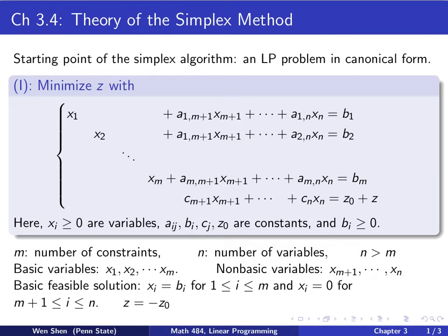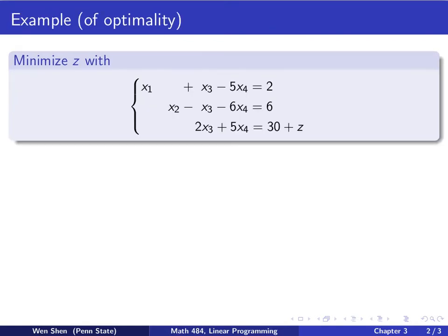Starting from that, we'll develop an algorithm. Now let's first take an example where optimality is reached. Look at this following example. We want to minimize z with the following. We have four variables: x1, x2, x3, x4. They're all restricted, always greater than or equal to 0, which is assumed, so I do not list that. Here we see the first two are the constraints.